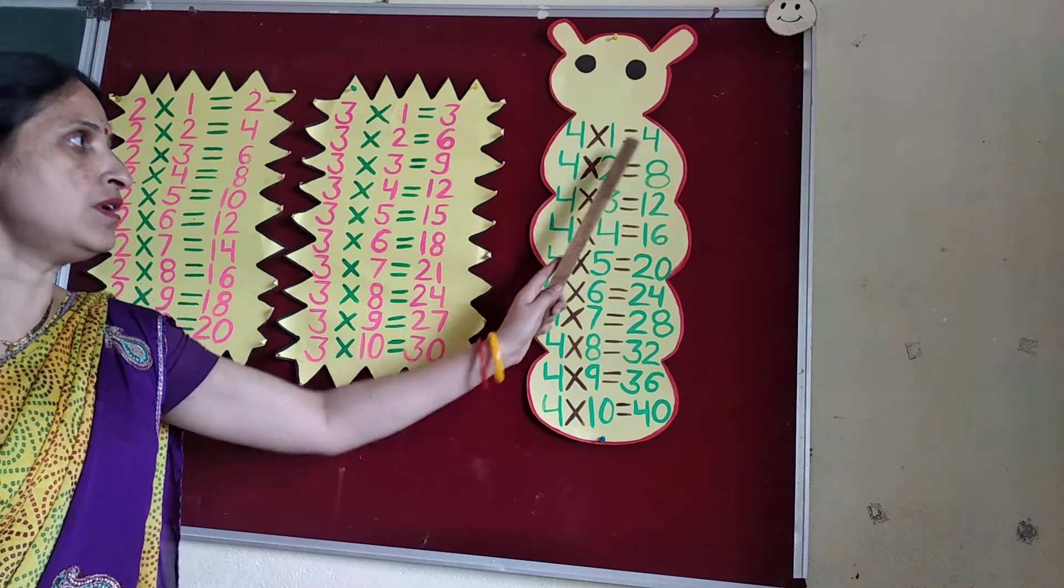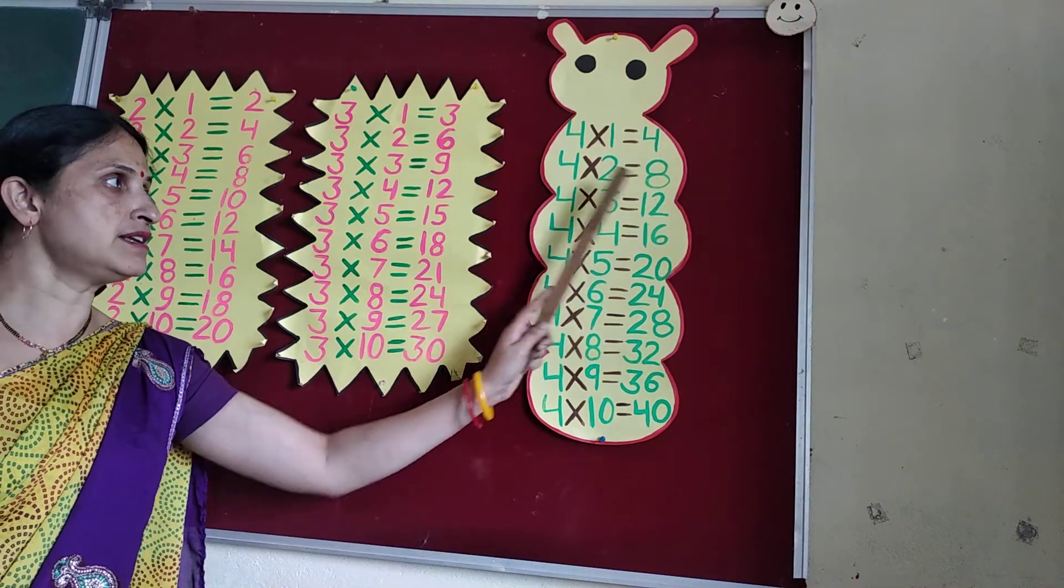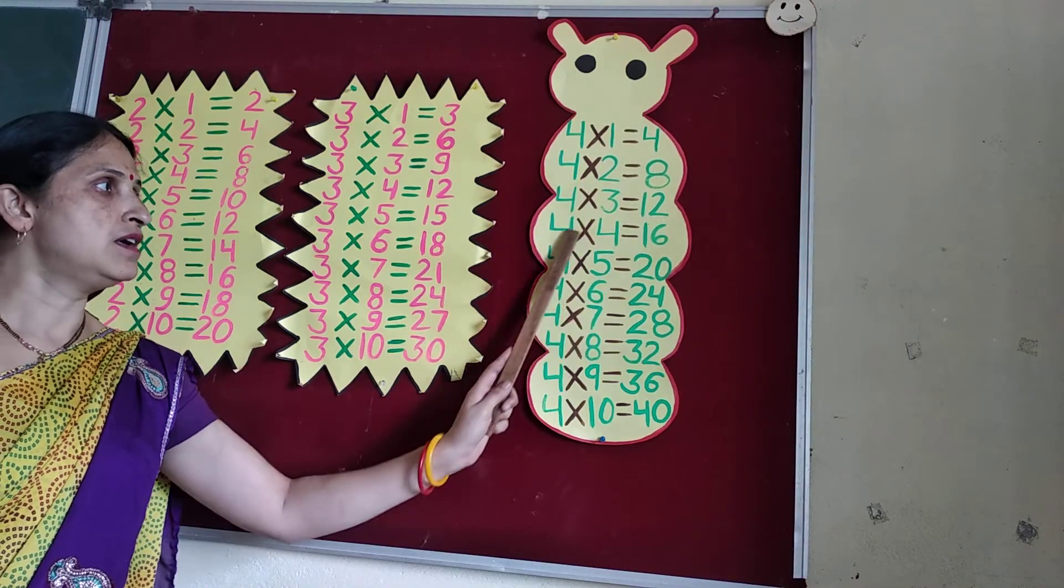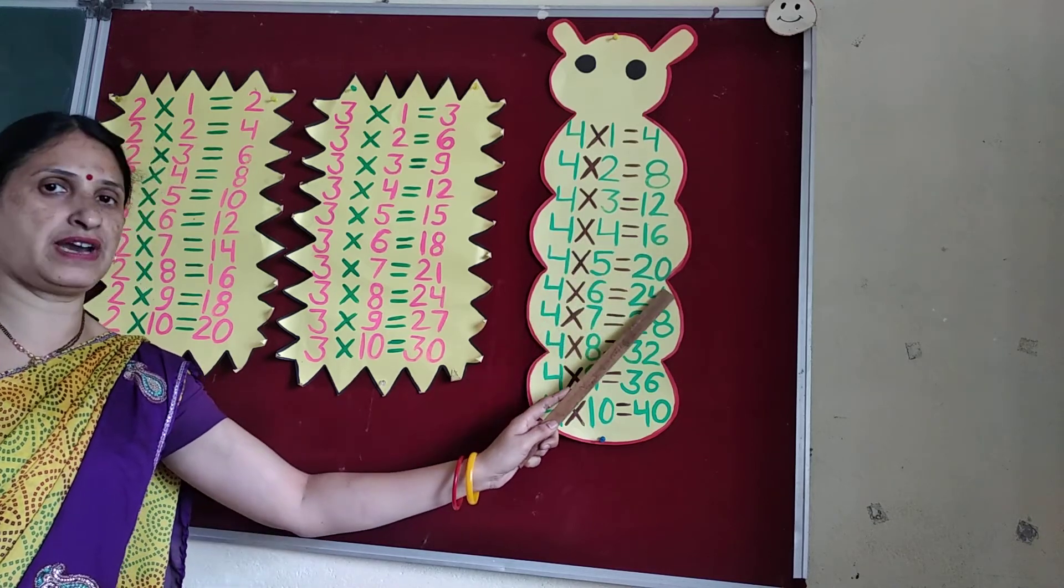4 1's are 4. 4 2's are 8. 4 3's are 12. 4 4's are 16. 4 5's are 20.